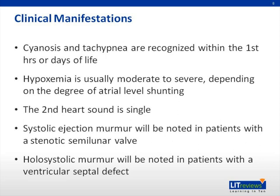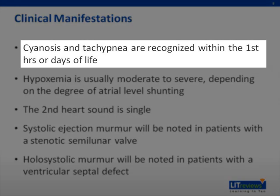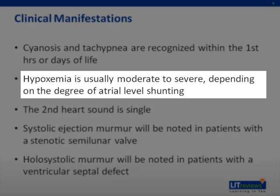The clinical manifestations of patients with transposition of the great arteries are dominated by findings associated with systemic desaturation. This results in cyanosis and tachypnea recognized within the first hours of life. Hypoxemia is usually moderate to severe, and this depends upon the degree of atrial level shunting. In patients with minimal atrial shunting, oxygen saturations may be 50 to 60%, while those with large atrial shunting can have saturations of 80 to 90% and be relatively stable.